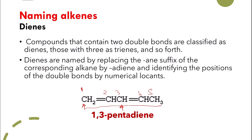So it's going to be 1,3 — and because it has 5 carbon atoms, it's 'penta' — and then 'diene'. So it's 1,3-pentadiene. This is how we name the dienes.